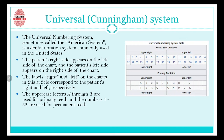First, let's study the Universal system, also known as the Cunningham system or the American system. It is called the American system because it is a dental notation used in the United States. The Cunningham system applies to both permanent dentition and primary dentition.